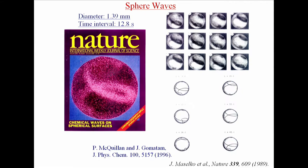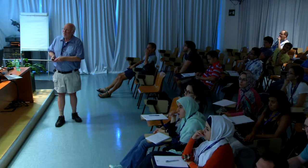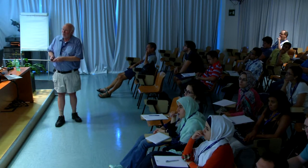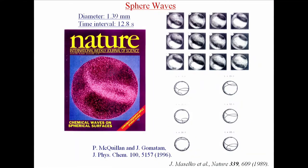One can also look in a non-planar configuration. Here is a bead about 1.4 millimeters in diameter — about three times as large as the hands-on experiment beads. It has a spiral wave starting at the North Pole. You can see through this bead — it comes around, crosses the equator, goes behind, crosses the equator again, and goes down to the South Pole. Snapshots taken every 12.8 seconds show successive periods — it's kind of like a spherical barber pole.